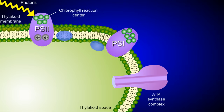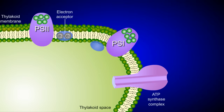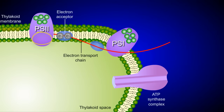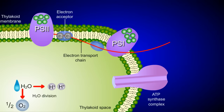The first thing that happens is that Photosystem 2 receives photons, or light energy. This light energy is transferred to a chlorophyll reaction center, causing electrons in the reaction center to become energized. These electrons become so energized that they escape Photosystem 2 and move to a nearby electron acceptor molecule located in the electron transport chain. Meanwhile, to replace the electrons leaving Photosystem 2, water is split, releasing oxygen, two hydrogen ions, and two electrons.